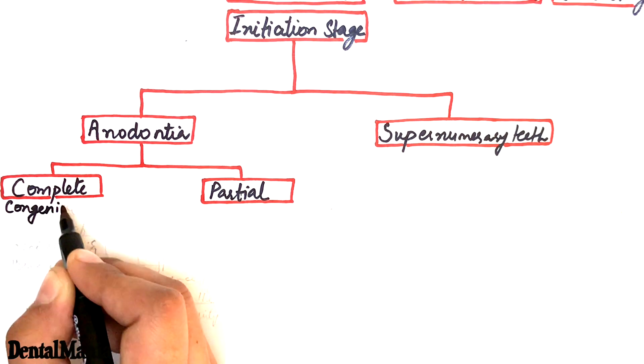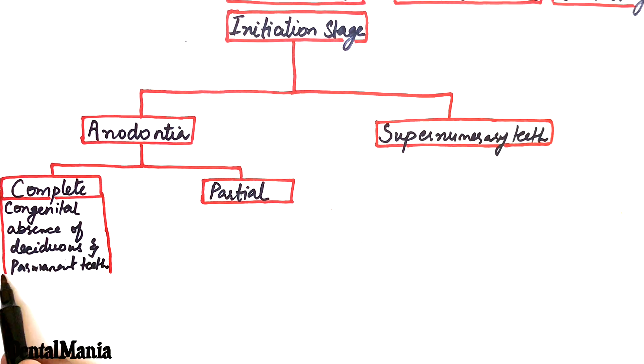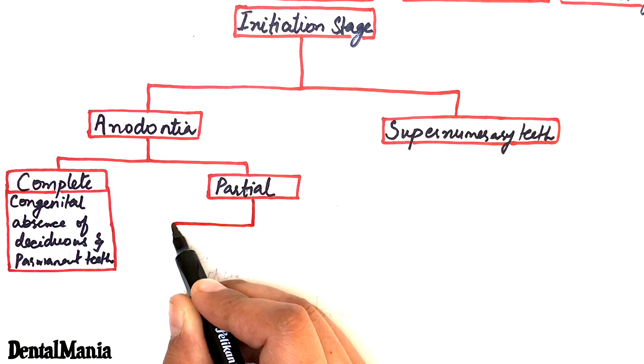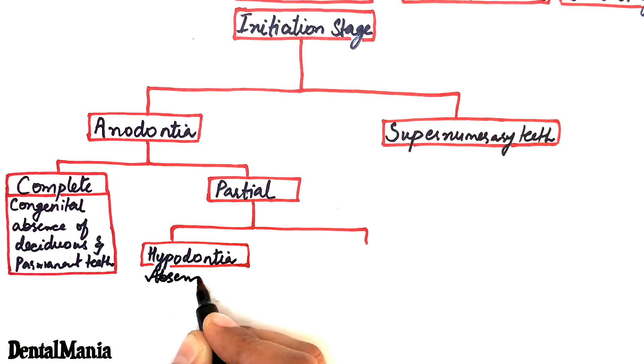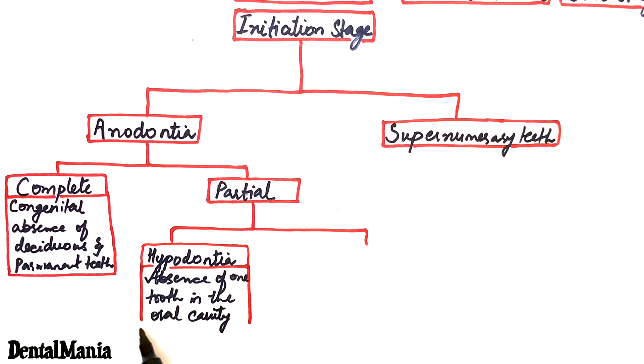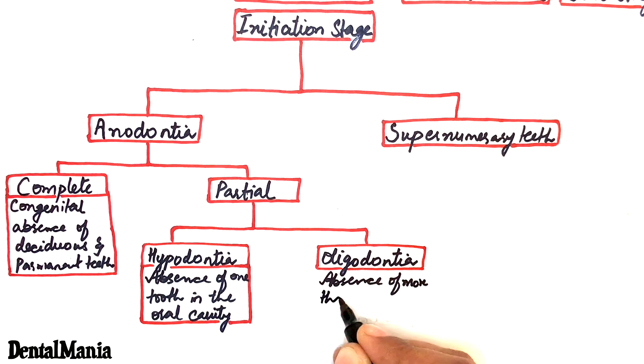Complete anodontia is the congenital absence of deciduous and permanent teeth and partial anodontia is further divided into hypodontia which is absence of one tooth in the oral cavity and oligodontia which is the absence of more than one tooth in the oral cavity.